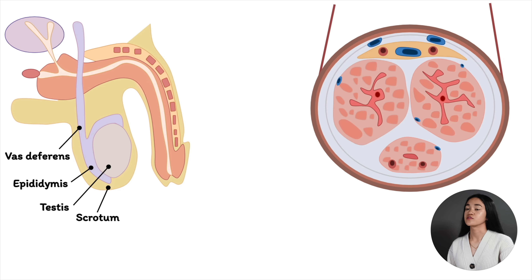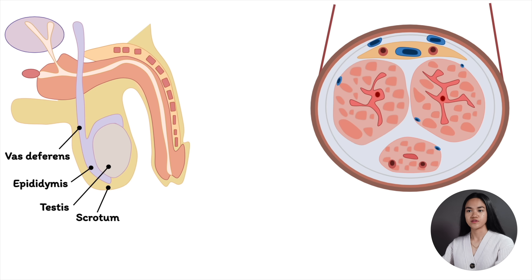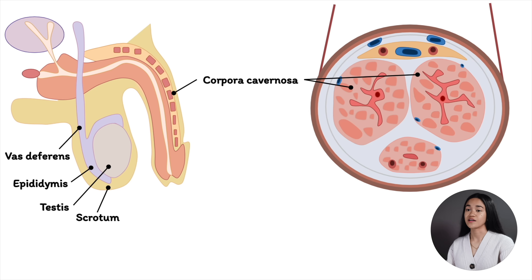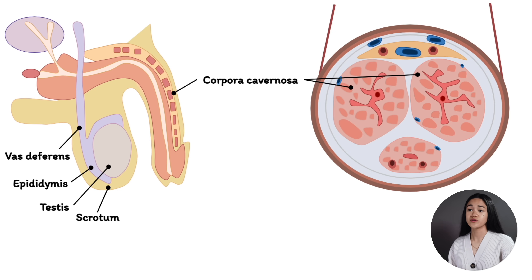The penis consists of three cylindrical compartments — vascular masses known as erectile tissues. They're sponge-like and are bound together by fibrous tissue. The two compartments that run along the sides of the penis are identical, and they are called corpora cavernosa. They are contained within a collagenous sheath called the tunica albuginea, and are also surrounded by elastic fibers, collagen, and smooth muscle, which helps regulate blood flow. They also contain sinusoids — small vessels for the passage of blood — and are functional erectile structures.